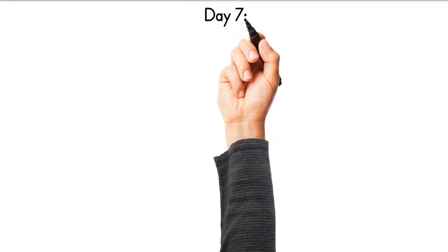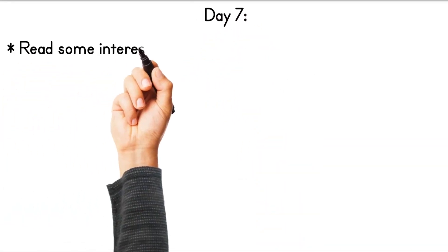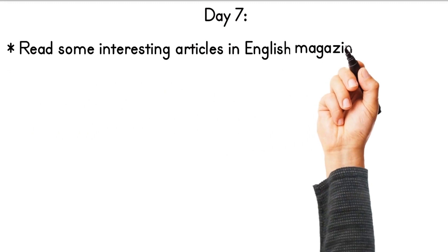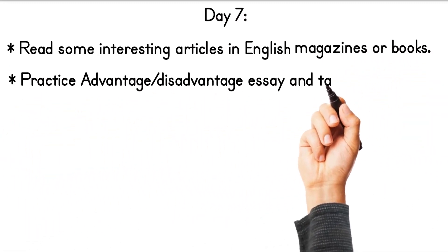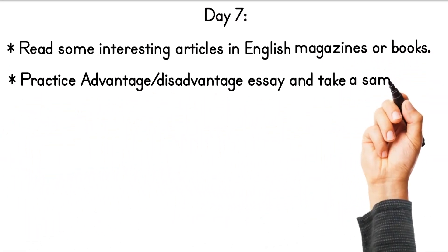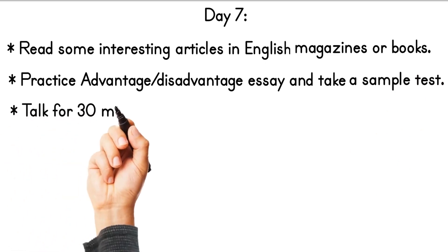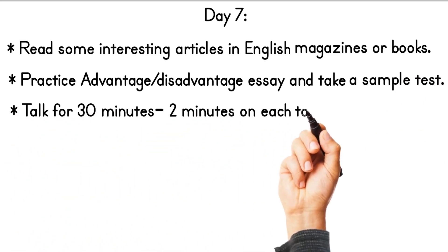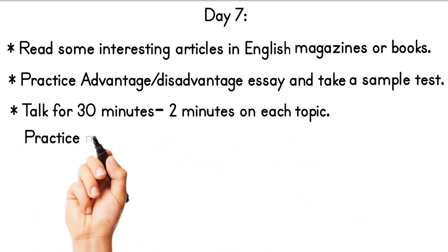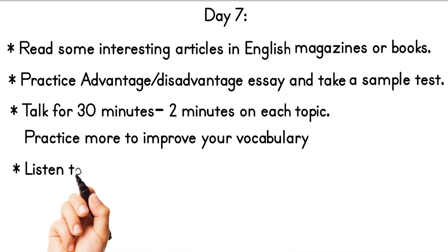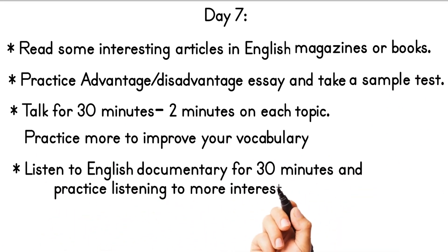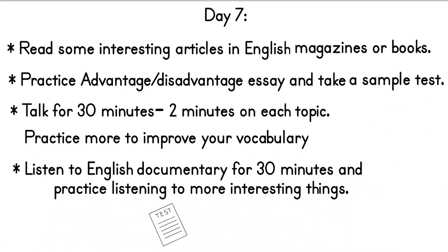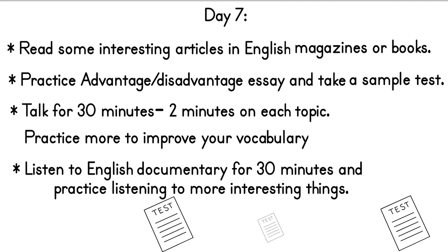In day seven, read some interesting articles in English magazines or books. Practice an advantage and disadvantage essay and take a sample test. Talk for 30 minutes, two minutes on each topic, and practice more to improve your vocabulary. Listen to an English documentary for 30 minutes and practice listening to more interesting things.